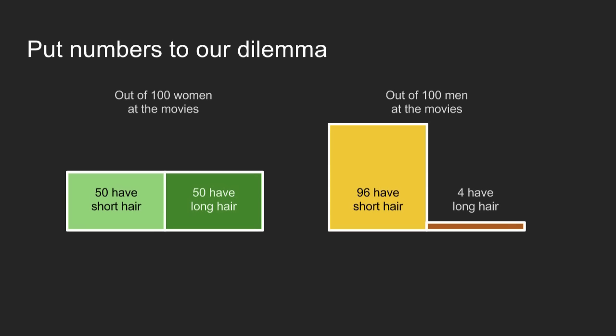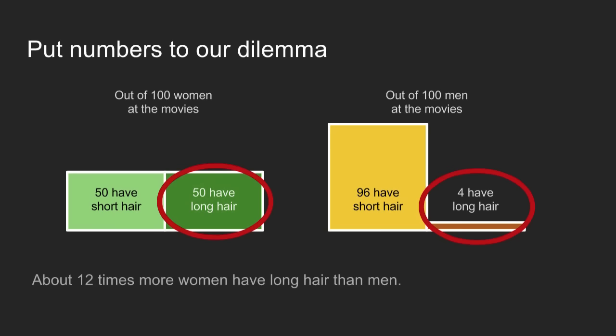To put numbers to this dilemma at the movie theater: out of 100 women at the movies, 50 have short hair and 50 have long. Out of 100 men, 96 have short hair and 4 have long. There are definitely more women with long hair than men with long hair, so it's a safe bet to assume this person is a woman. Now we've made a subtle assumption that there are about the same number of men and women at the movies.